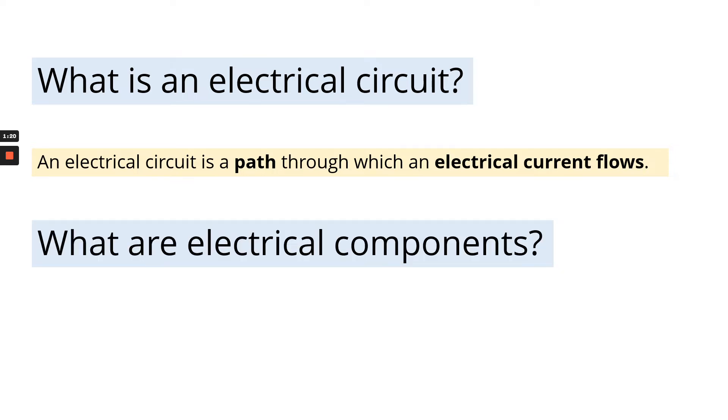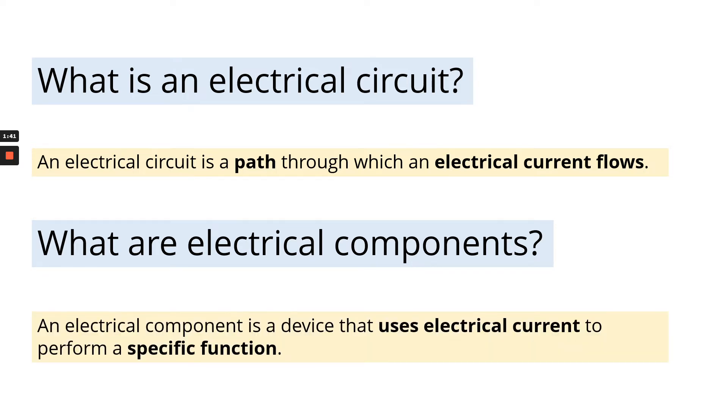Within that electrical current, the path, we've got different electrical components that can be placed around the circuit in different positions in different ways in order to produce a specific outcome. But what is an electrical component? They are devices that use electrical current to perform a specific function. So for example, a light bulb is an electrical component and that uses electrical current to produce light.